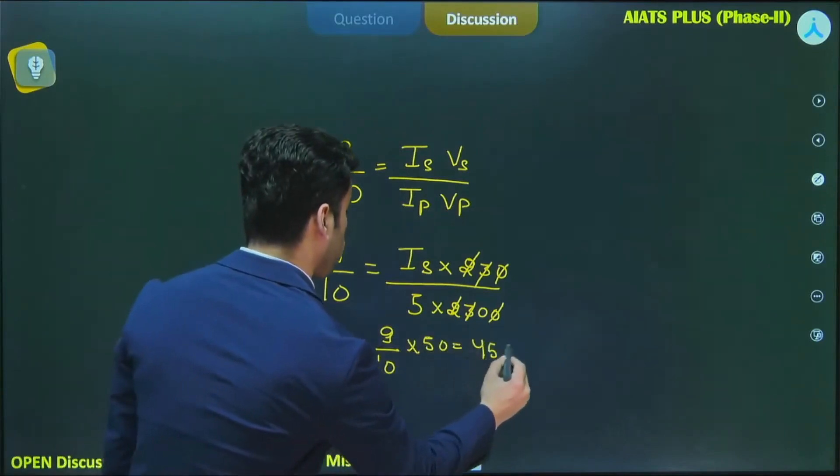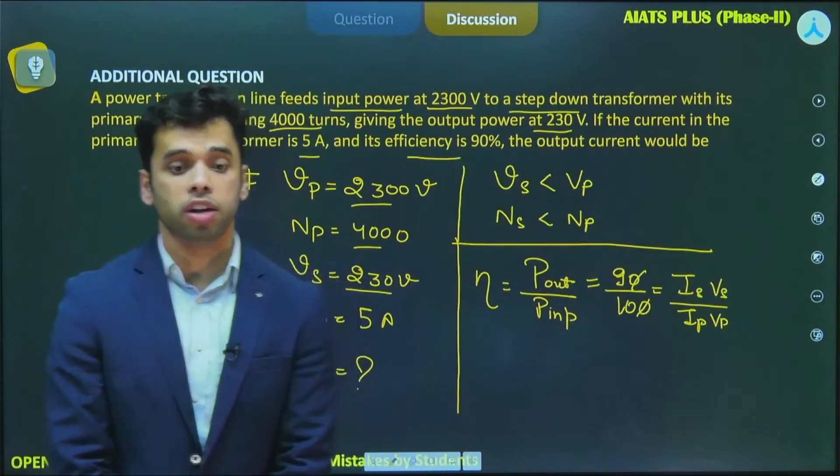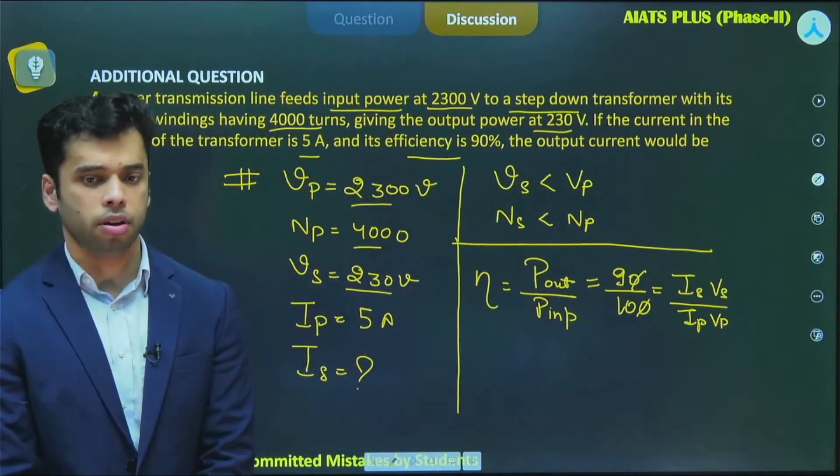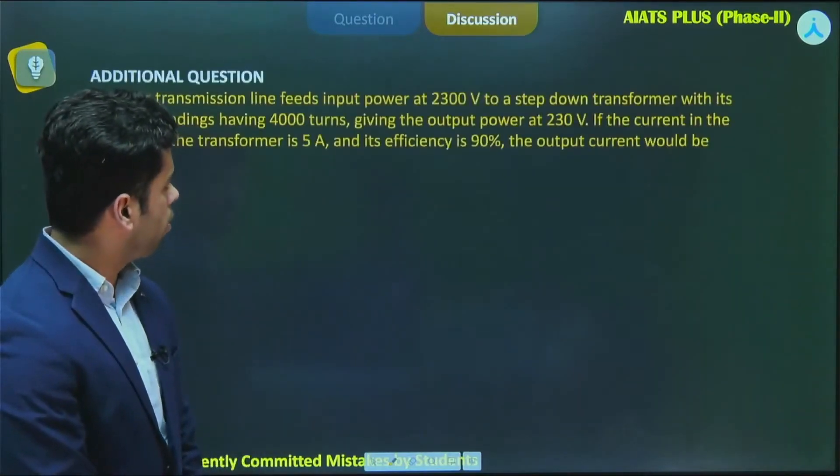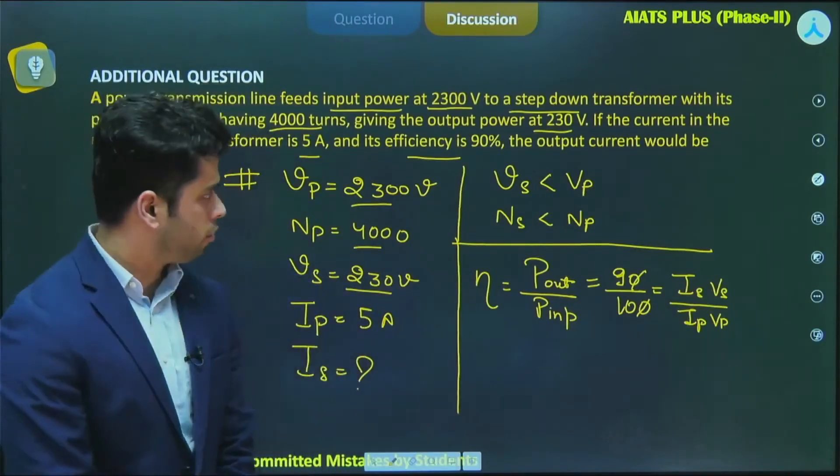That means the output current would be equal to 45 ampere. Someone commented the answer, it is 45 ampere, yes very good. The correct answer is 45 ampere. Very few students got the right answer.